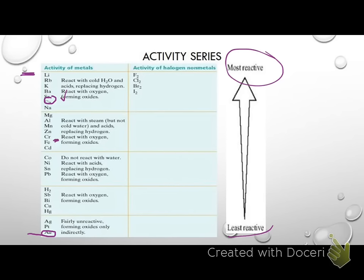But iron could not replace calcium in a compound because calcium is more reactive. Same thing over here with the non-metals. Fluorine is the most reactive, so it can replace everything. But iodine can't replace anything. We'll do a couple of examples so you can see how this works. What I want to make sure you understand is that metals will only replace other metals.